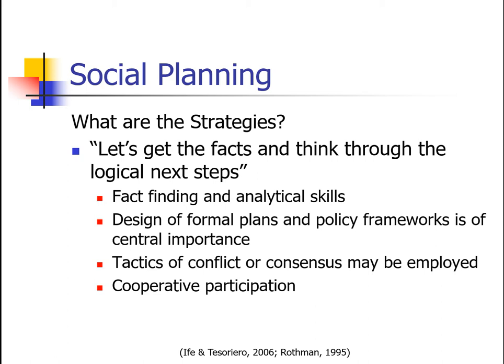The strategies of social planning are really about gathering pertinent data about the problem and then deciding on an empirically supported and feasible course of action — fact-finding, research skills. It's about designing formal plans and policy frameworks. There could be conflict or consensus tactics, but usually more often it's cooperative participation.